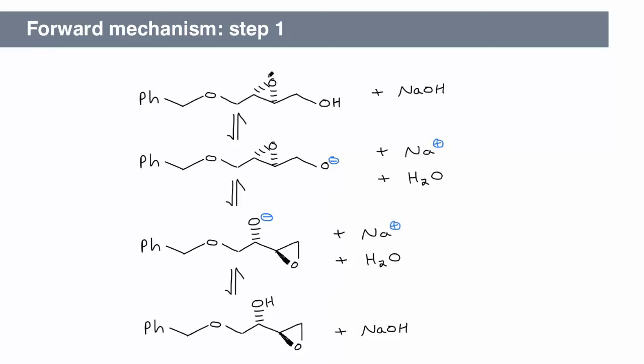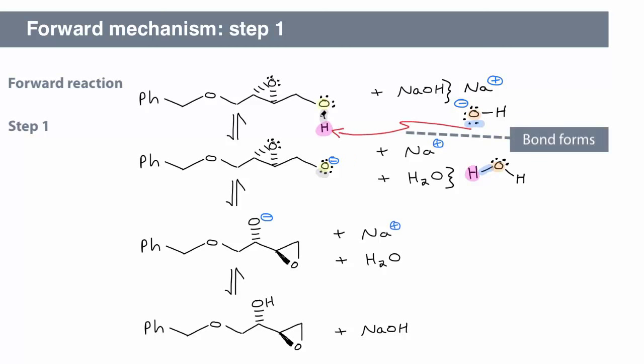We have to expand and map the mechanism as usual. In the first step, a new OH bond forms, and an OH bond breaks. We can draw the electron pushing arrows to represent this process.